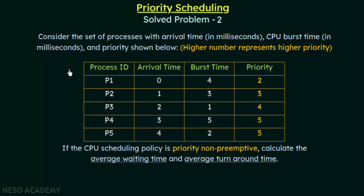In the previous lecture, we solved a problem that was based on preemptive priority scheduling. But this question is based on non-preemptive priority scheduling. We have to calculate the average waiting time and the average turnaround time for this set of processes with process IDs P1 to P5, where arrival times, burst times, and priority are given. Note that in this problem, higher number represents higher priority.